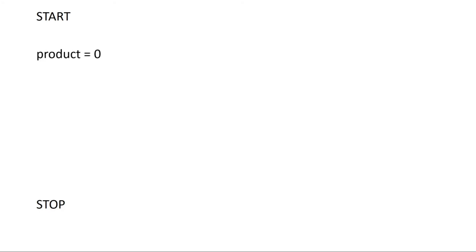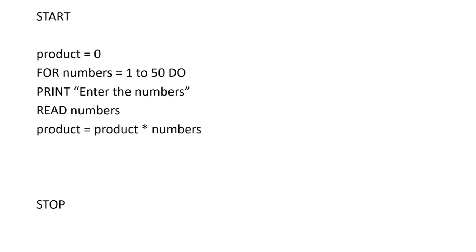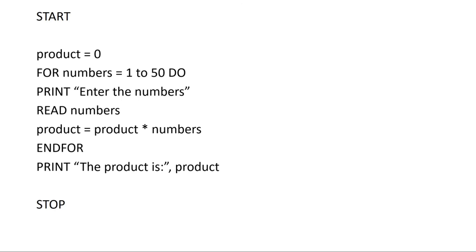Again, the first thing we need to do is initialize our cumulative total variable — in this case we're going to use 'product'. Then we have our for loop where 'numbers' stores the count, so this loop will execute 50 times. Afterwards we ask the users to enter the numbers and accept them. Now we make a modification to the cumulative total formula to find the product: product = product * numbers. Because we're finding the product, not the total, we change the plus sign to an asterisk to multiply the numbers. Afterwards we end the for loop and print the result: 'The product is' followed by the variable product.